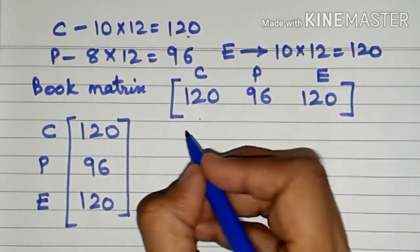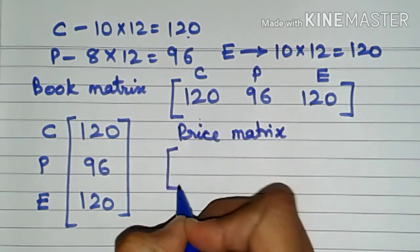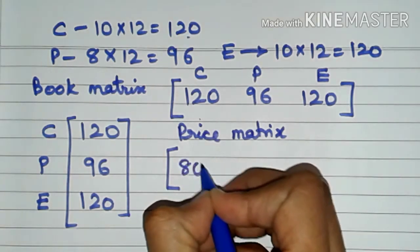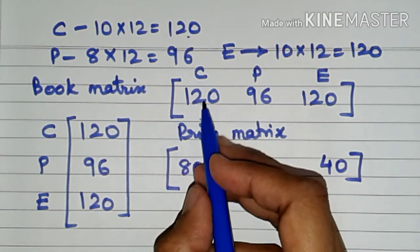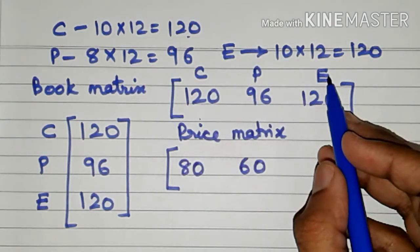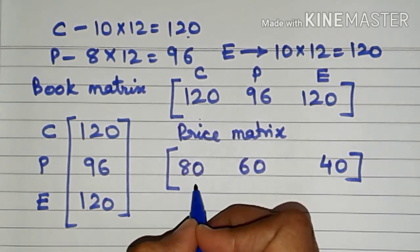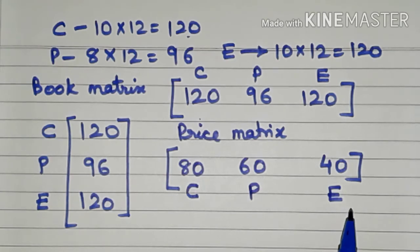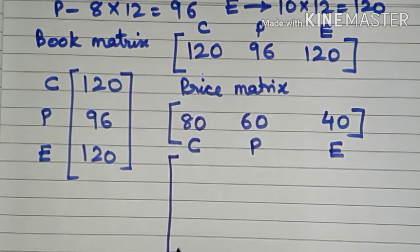There is also a price matrix containing the selling prices of all three books. It can be a row matrix or column matrix. The selling prices are 80, 60, and 40. We must maintain the same order: if the book matrix has chemistry first, physics second, and economics third, the price matrix must follow the same order — chemistry, then physics, then economics — otherwise you will not get the correct answer.